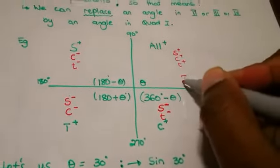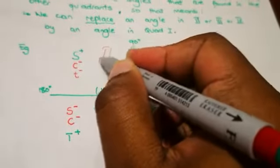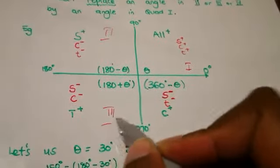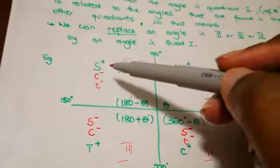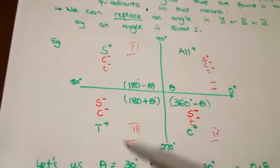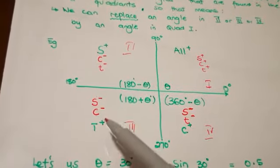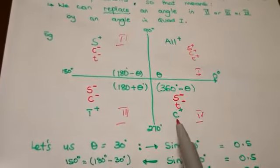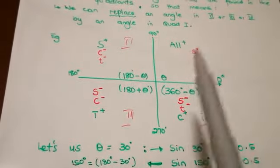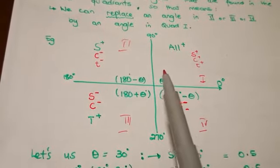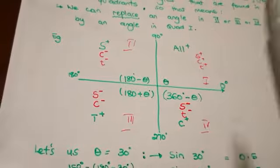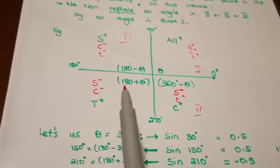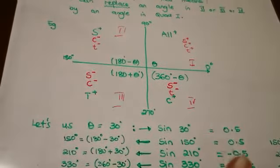This is quadrant 1, this one is quadrant 2, this is quadrant 3, and this is quadrant 4. In quadrant 1, all the trig functions are positive. In quadrant 2, only sine is positive — cosine and tan are negative. In the third quadrant, tan is positive, meaning sine and cosine are negative. In the fourth quadrant, only cosine is positive, meaning sine and tan are negative. Angles in the first quadrant are acute angles — theta. Second quadrant: 180 minus theta. Third quadrant: 180 plus theta. Fourth quadrant: 360 minus theta.